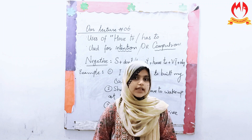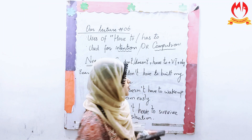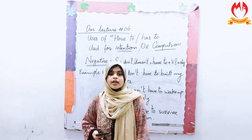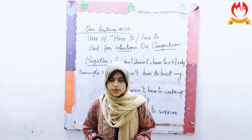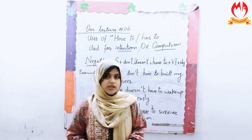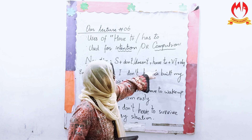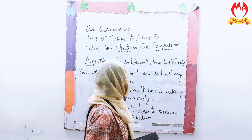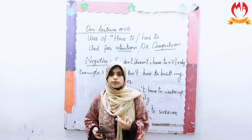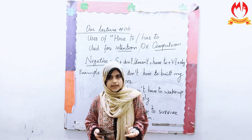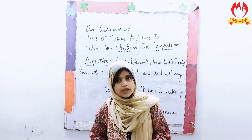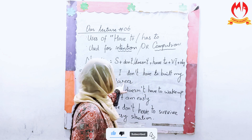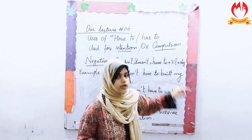Alright class, now we need to discuss the negative form of 'has to' and 'have to'. For a negative sentence, always remember the formula: Subject + don't / does not + have to + verb (first form) + object. Always use 'have to' after 'don't' and 'does not'. The first example is: 'I don't have to build my career' — meaning there is no intent or compulsion to do it.